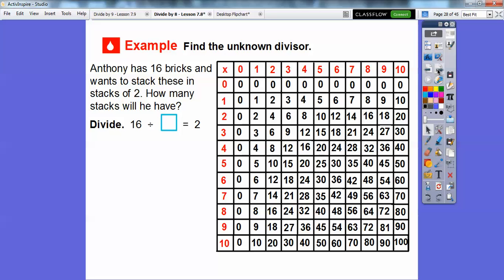Here's an example. Find the unknown divisor. So here's another way. We can use a multiplication table here. So Anthony has 16 bricks this time and he wants to stack these in stacks of 2. So how many stacks will he have? He stacks them in stacks of 2. So this is going to be 16 divided by what number equals 2? Well, if you don't know what that is, what you can do is you can think of the related multiplication fact and use the multiplication table over there to think of what number times 2 equals 16. So this number times this 2 is going to equal 16. So here's our multiplication table right here.